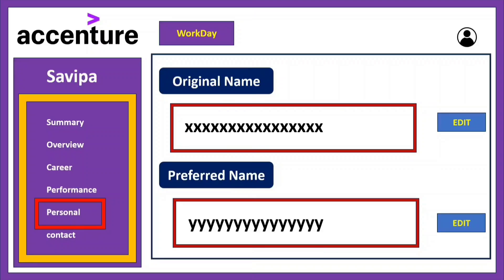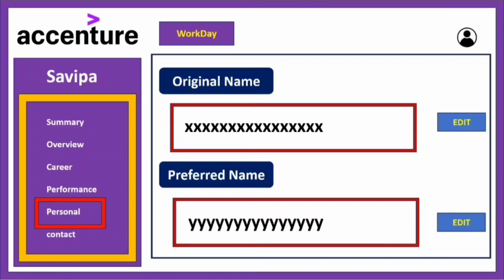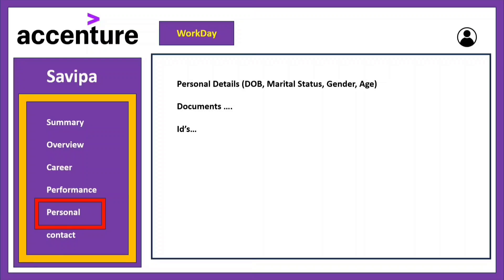Now the Personal section. As mentioned earlier, you can change your original name to a preferred name here. The section asks you to enter your legal name as per your documents — such as your PAN card. Then it asks for your preferred name: the name you want displayed on Teams or Outlook. Click edit in the preferred name section, enter the name you want, and update it. Other personal details like date of birth, marital status, gender, and uploaded documents are also visible here to you and any recruiter viewing your profile.